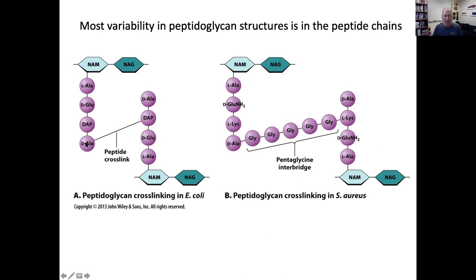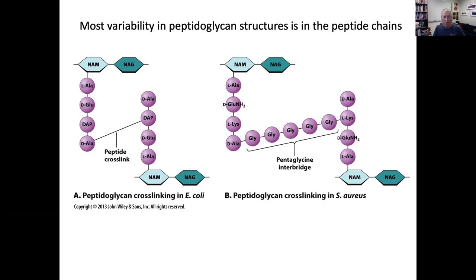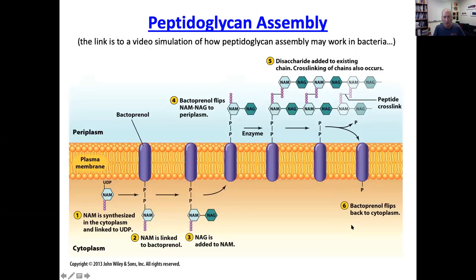D-alanine being one of the participants in the cross-linking is pretty common, and that actually relates to the ability of certain antibiotics to target the enzymes called transpeptidases that are making these bonds. The details of peptidoglycan cross-linkers can vary, but the backbone is the same in these two different bacteria. E. coli happens to be Gram-negative; Staph aureus happens to be Gram-positive.